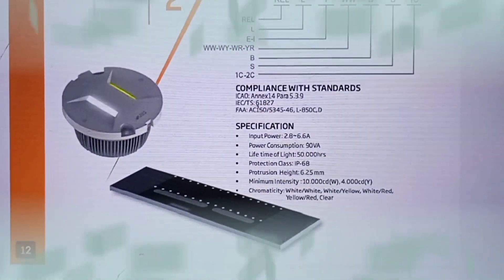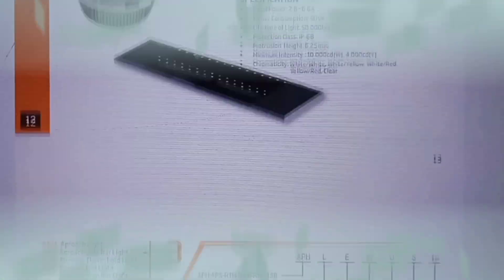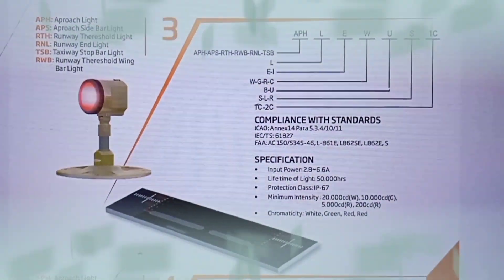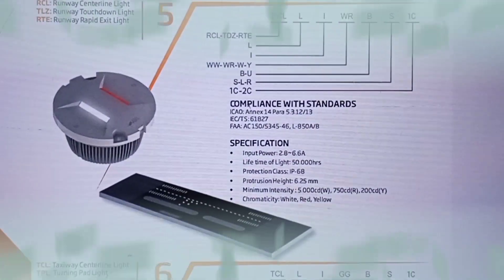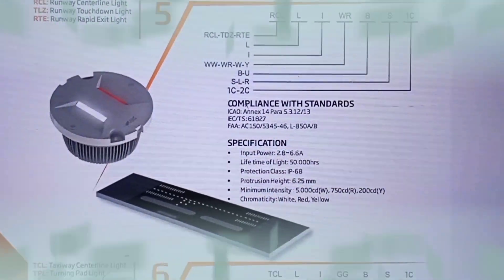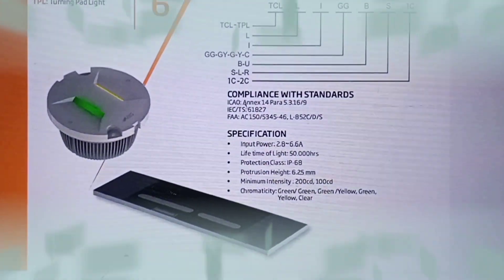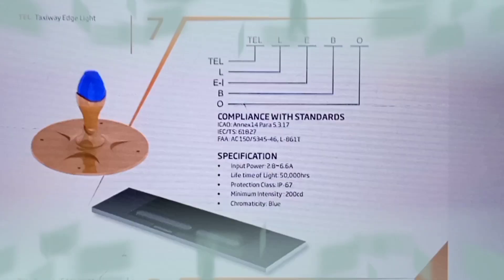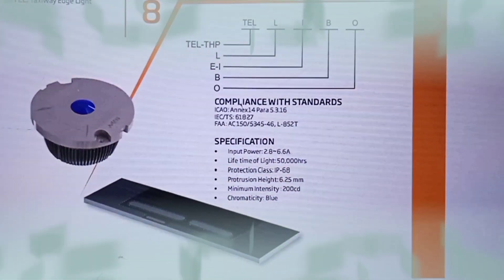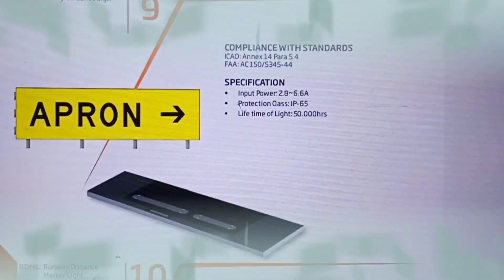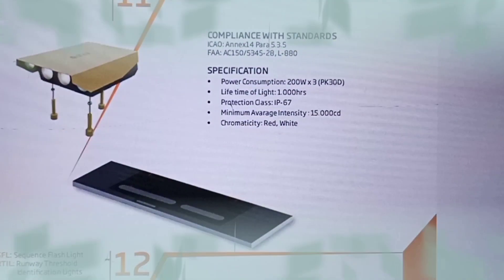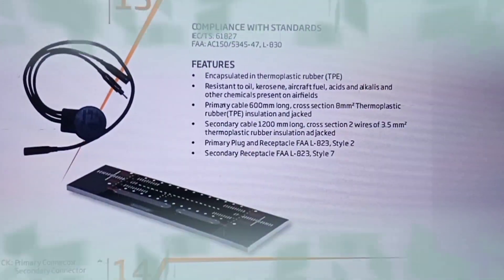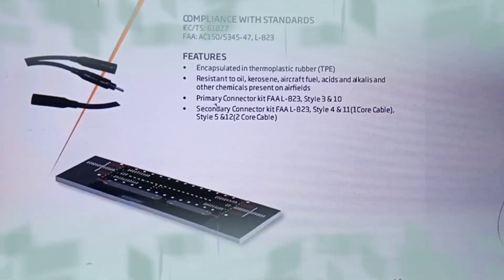Hello friends, welcome to DKBMS Electrical. Today I will talk about airfield ground light, meaning the ATC airport traffic control system. First of all, what kind of light is installed in the airport runway? What is its function? What are the features given in that?